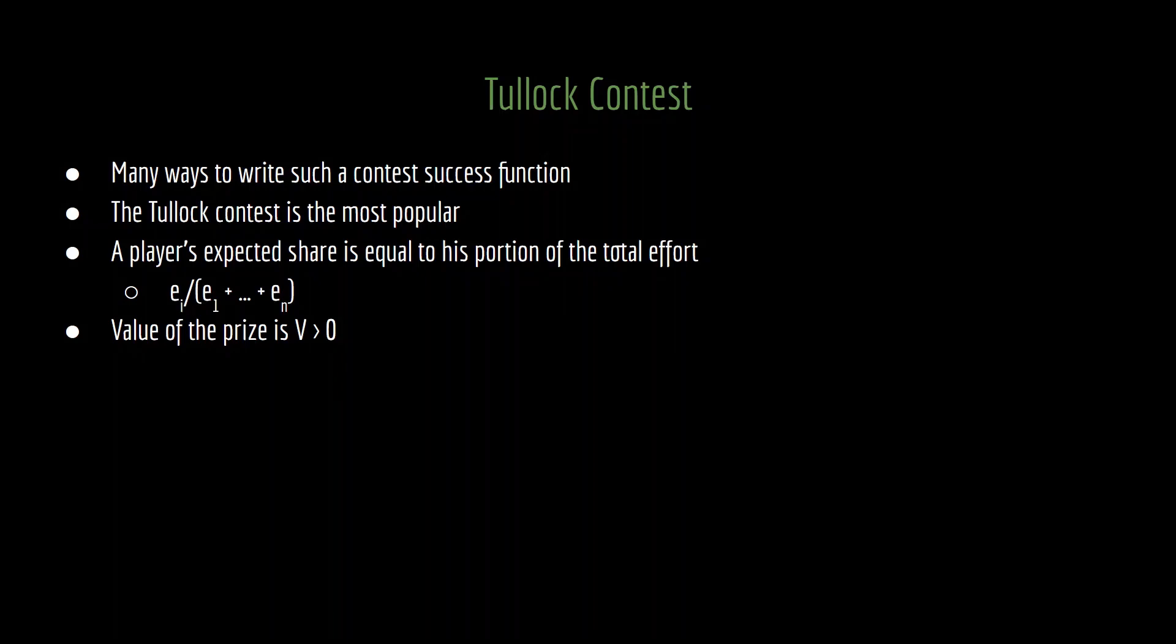Despite the fact that there are a whole bunch of different ways you could structure a contest success function to meet those requirements, there is one in particular that receives a large amount of the focus, and that is something known as a Tullock contest. In a Tullock contest, and specifically the ratio form, a player's expected share is equal to his portion of the total effort exerted. In other words, if you are group i, then you take the effort that you have exerted, and you divide it by the sum of all efforts. And that ratio, that proportion, is how much you're expecting to receive.